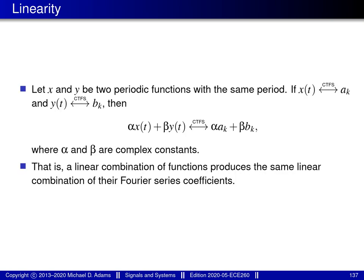The first property of Fourier series is the linearity property. Let X and Y denote two periodic functions with the same period. Suppose that X has the Fourier series coefficient sequence A, and Y has the Fourier series coefficient sequence B. The linearity property says that we automatically know the Fourier series coefficient sequence of any linear combination of X and Y — that is, a linear combination of functions produces the same linear combination of their Fourier series coefficients.